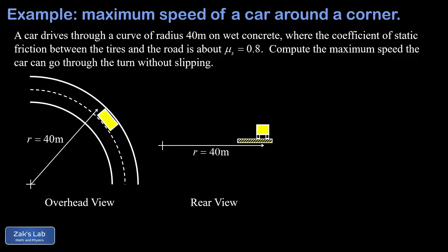In this problem we're given a car rounding a corner with a radius of 40 meters. This is on wet concrete with an approximate coefficient of static friction of 0.8, and the problem is to find the maximum speed the car can go around this corner without slipping.